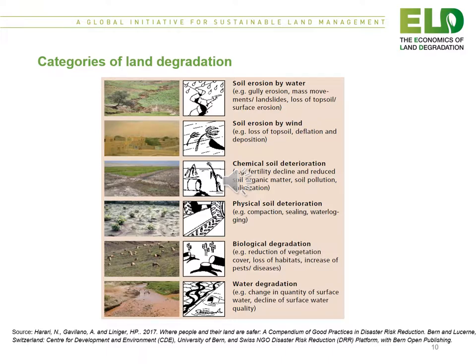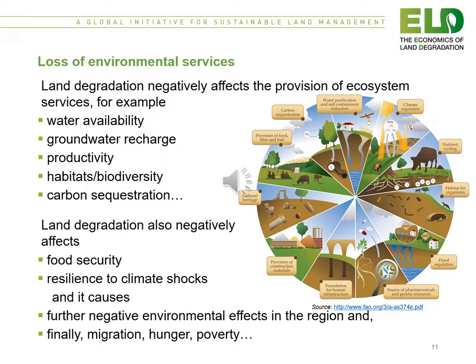Biological degradation, which is the reduction of vegetation cover, and water degradation are also categories. Land degradation negatively affects the provision of ecosystem services — depicted in the figure accompanying this presentation. Ecosystem services affect water availability, the recharge of groundwater, productivity, habitats and biodiversity, and carbon sequestration. Land degradation also negatively affects food security, the resilience to climate shocks, and causes further negative environmental effects in the region, and is linked with migration, hunger and poverty.